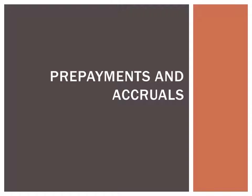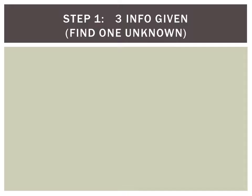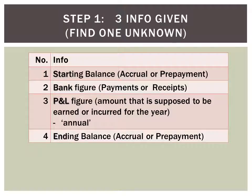In this lesson I would like to talk about prepayments and accruals — a chapter that is pretty confusing for some people. This is a three-step process. In step one, you realize that in every question there will be four kinds of information: three of them will be given and one will be an unknown. The first is the starting balance, which could be either an accrual or a prepayment.